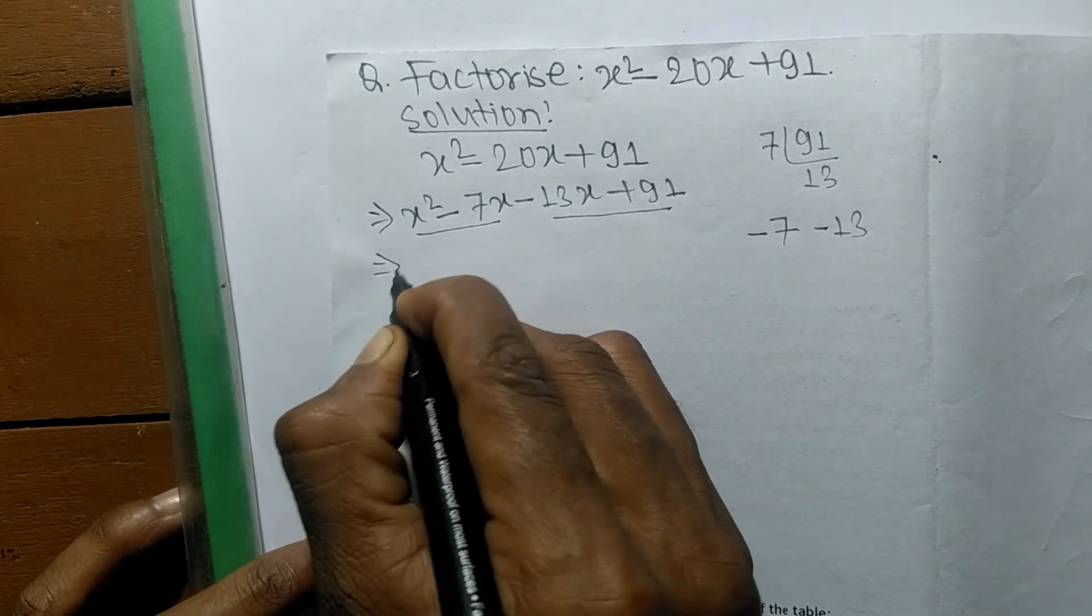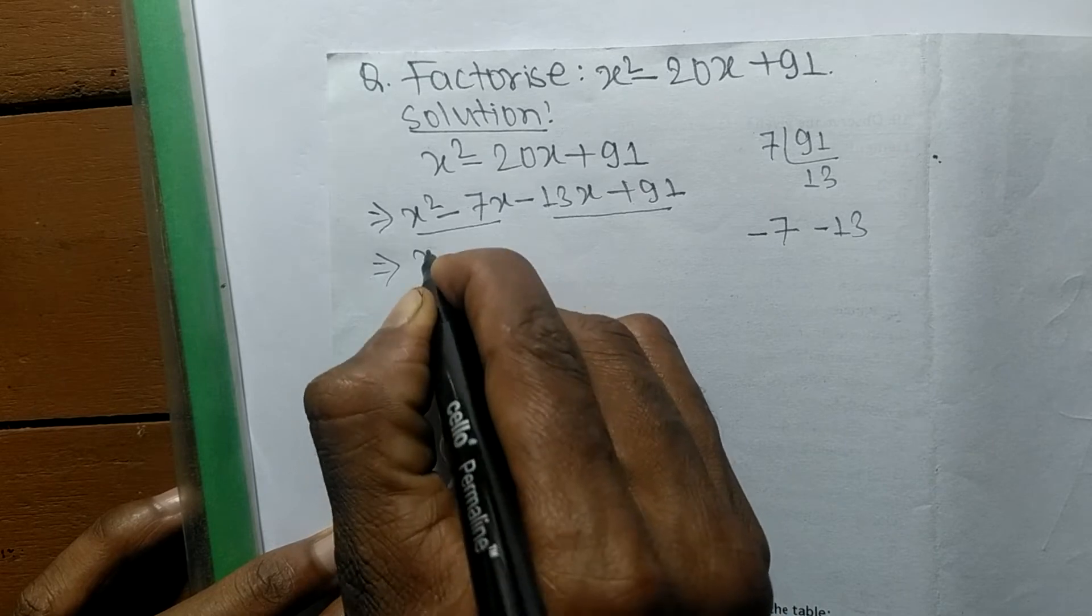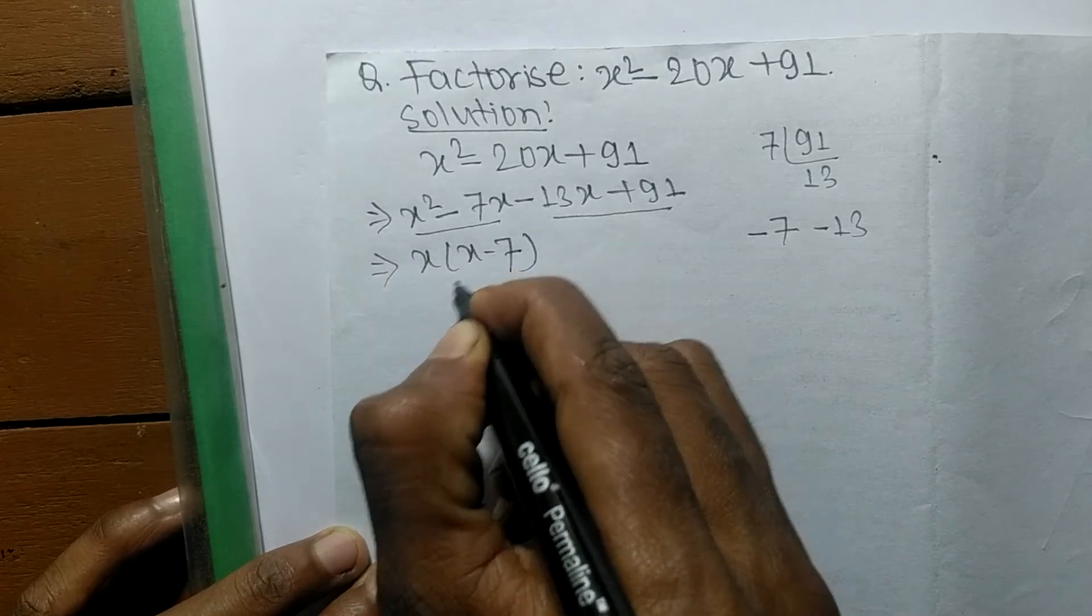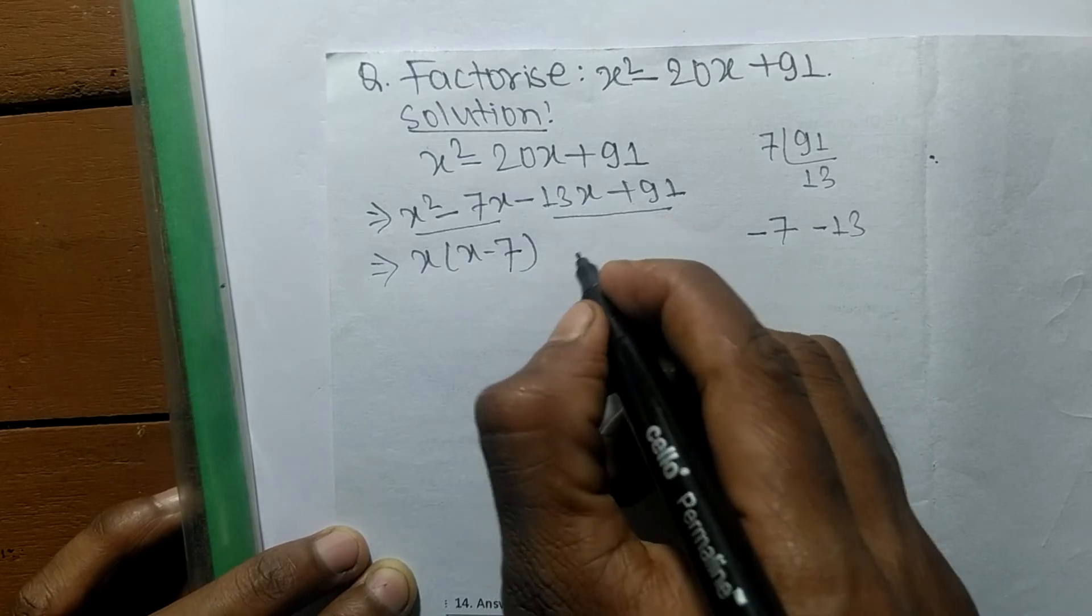In the first pair, the common here is x, so the remaining is x - 7. In the second pair,